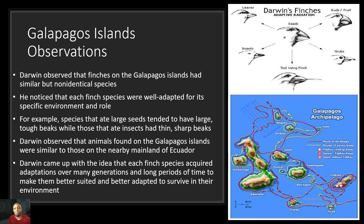Now let's take a look at Darwin's Galapagos Islands observations. Darwin observed that finches on the Galapagos Islands had similar but non-identical species. He noticed that each finch species was well-adapted for its specific environment and role. For example, species that ate large seeds tended to have large, tough beaks — notice that this finch species has a large, tough beak, most likely for breaking seeds and hard nuts. While those that ate insects had thin, sharp beaks. Notice that these species look similar, but the big difference is the beak size because they ate two different types of food.